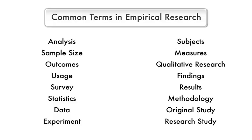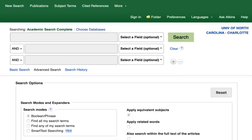There are a number of keywords that can be common to empirical research articles. You can look for these terms in research articles or incorporate them into your searches to more easily find empirical research articles. There are a range of library databases you can use to find empirical research.